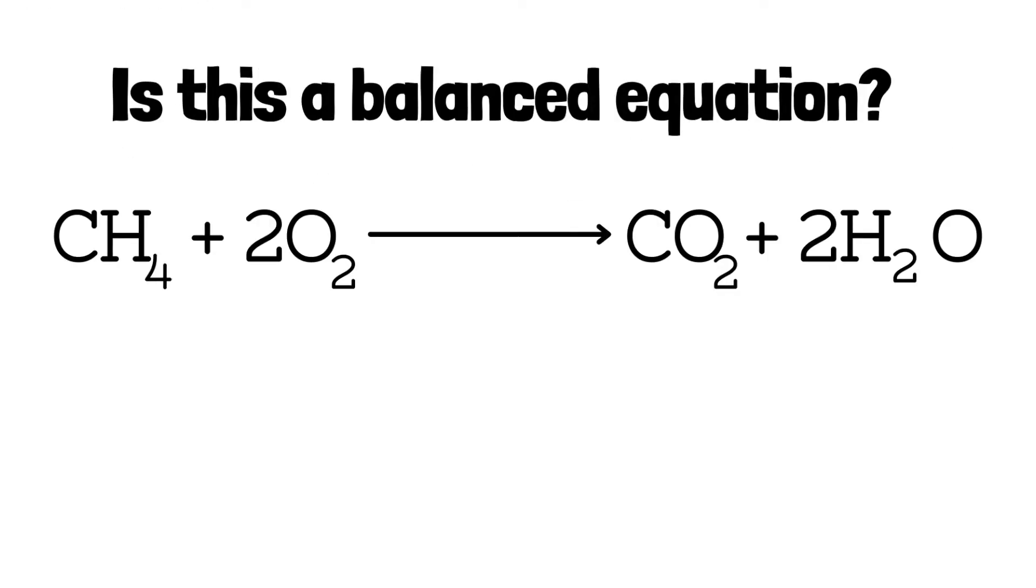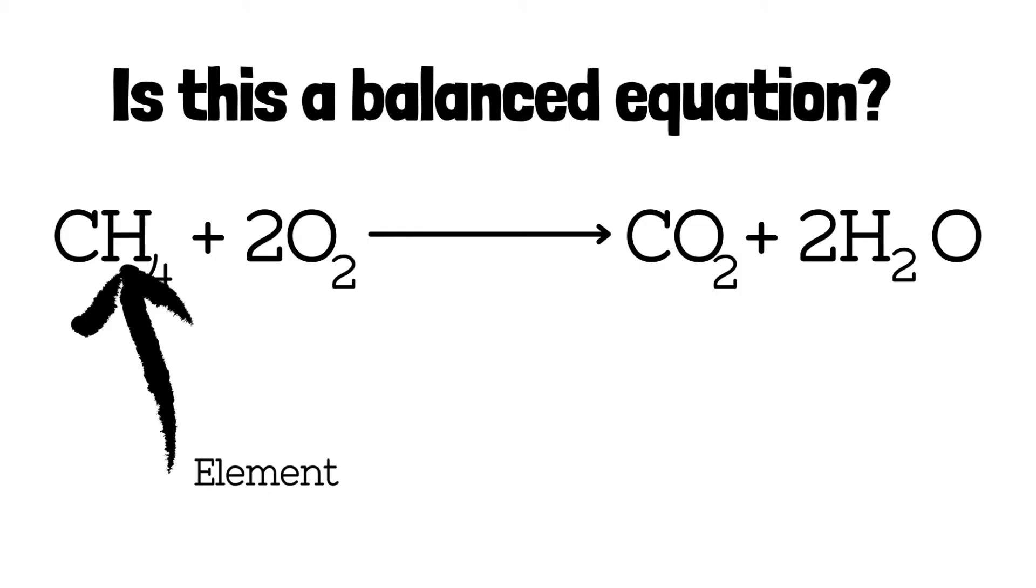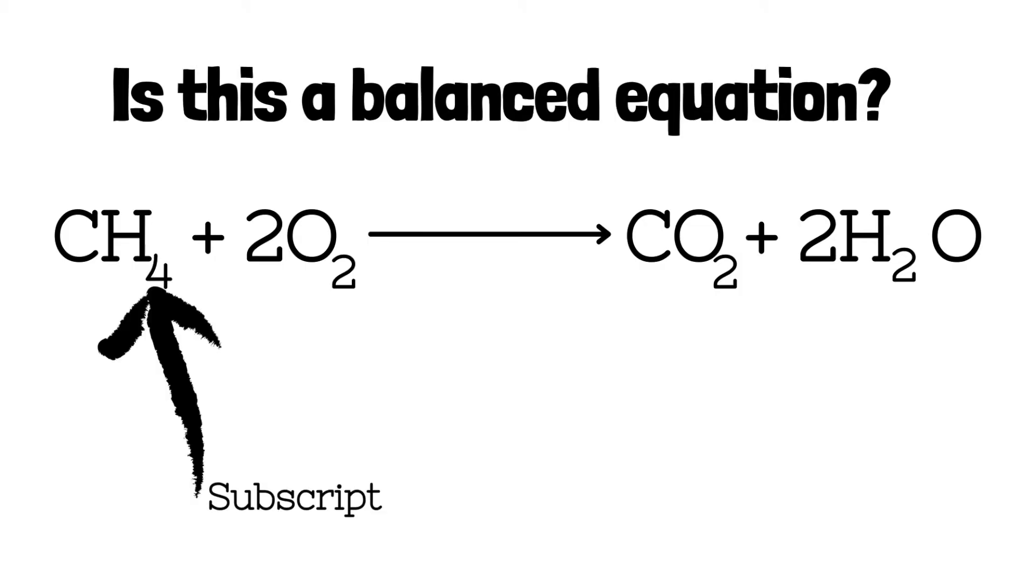When I look at a chemical equation, the first thing I'm looking at are the elements in that equation. Here I can see I have one carbon element because there is one C at the beginning of this molecule. Next to it, I have an H, but it has a subscript with a 4. This means that I have 4 hydrogen.